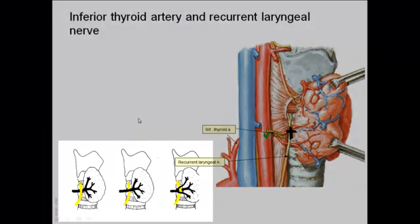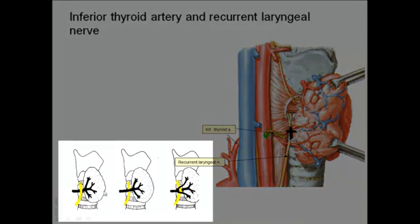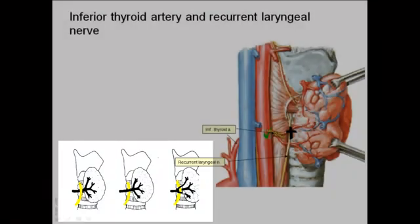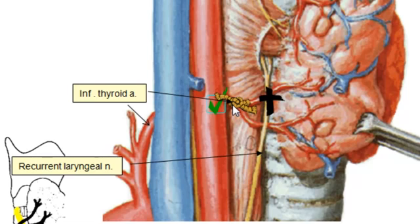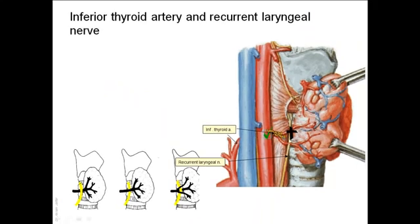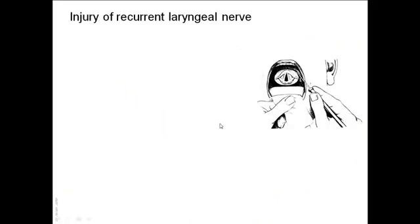The recurrent laryngeal nerve has a variable relation to the inferior thyroid artery, and because of its proximity, it may be injured while ligating this artery during thyroidectomy. It is advisable to ligate the inferior thyroid artery well away from the gland, lateral to the gland, before it begins to divide, to ensure the recurrent laryngeal nerve is not injured.